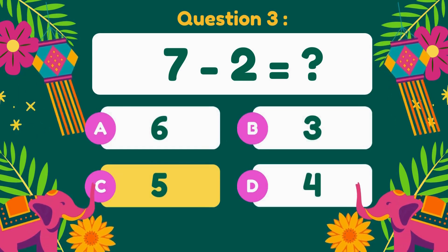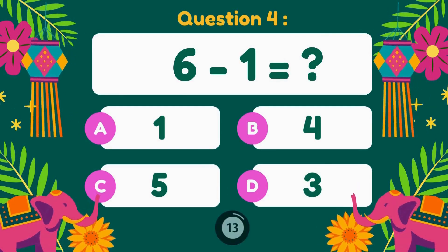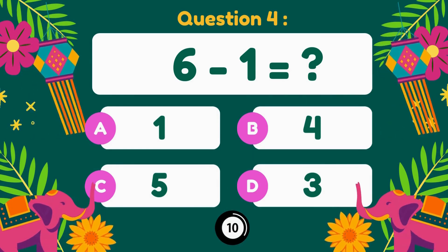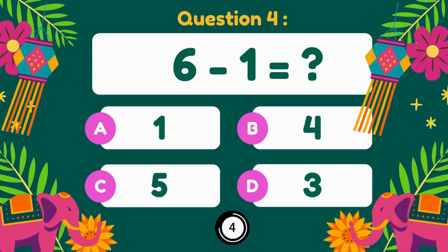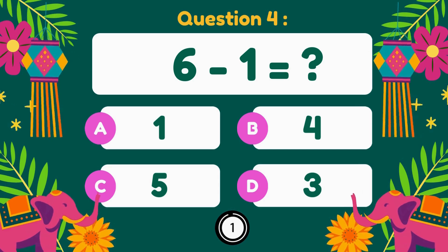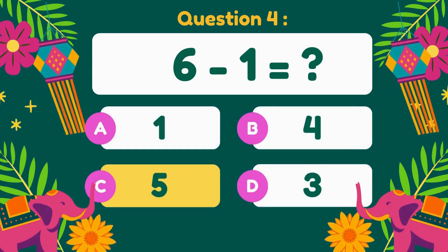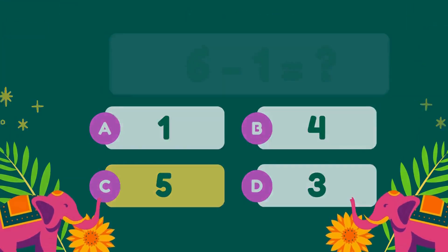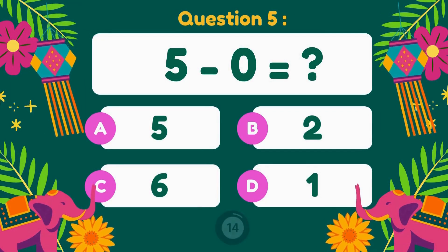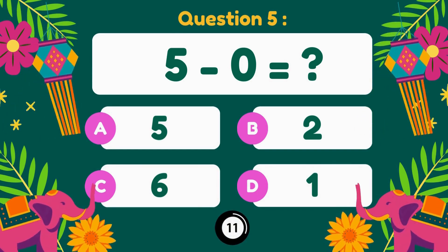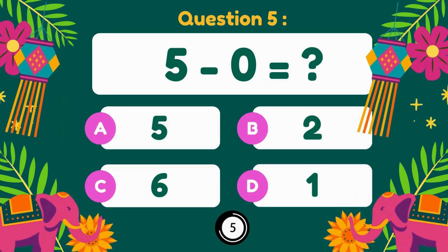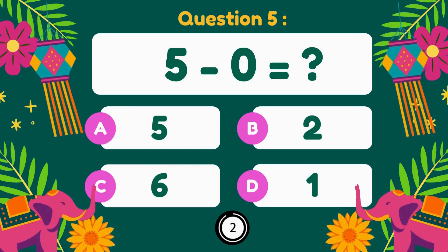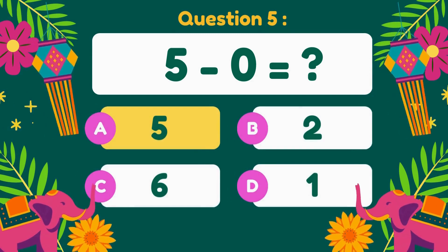7 minus 2 is 5. 6 minus 1. 6 minus 1 is 5. 5 minus 5. 5 minus 5 is 0.